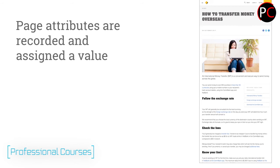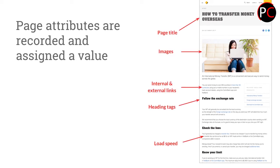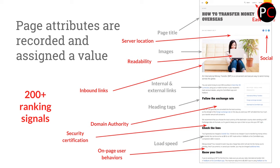When a page or site is crawled by a search engine, the page attributes are recorded and indexed. Here we have an example of a page, and when the search engine crawls it, it records things like the page title, images, internal and external links, h tags, and a ton of other attributes — like how fast it loaded, whether it has any security certification, social buttons, readability, text size, etc. This is often said to be 200 or more ranking signals collected by the search engine when indexing a page.